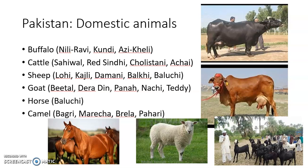Pakistan has two main breeds of buffalo, eight breeds of cattle, one breed of yak, 25 breeds of goat, 28 breeds of sheep, four breeds of camel, and one breed of horse. Famous buffalo breeds include Nili-Ravi and Kundi; cattle breeds include Sahiwal, Red Sindhi, and Cholistani; notable sheep breeds include Lohi, Kajali, Damani, Balkhi, and Balochi.